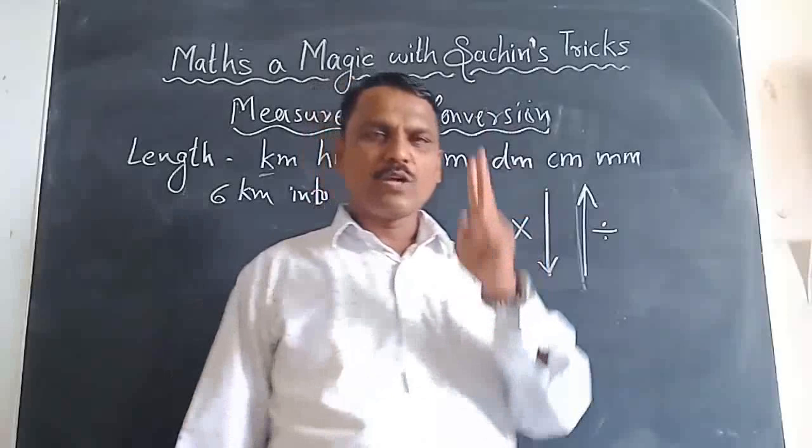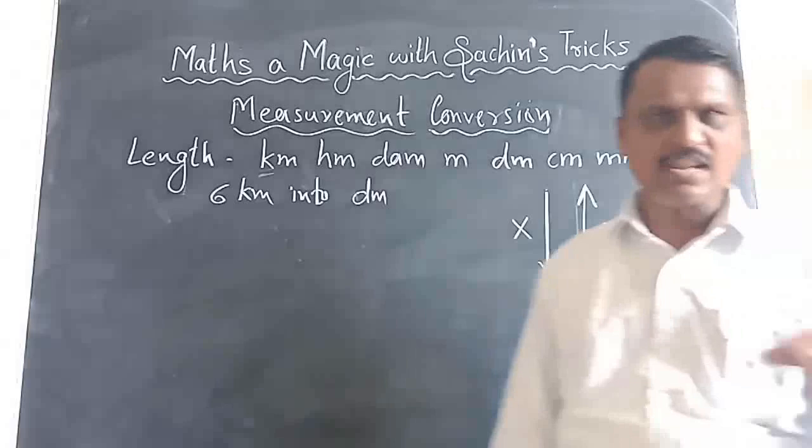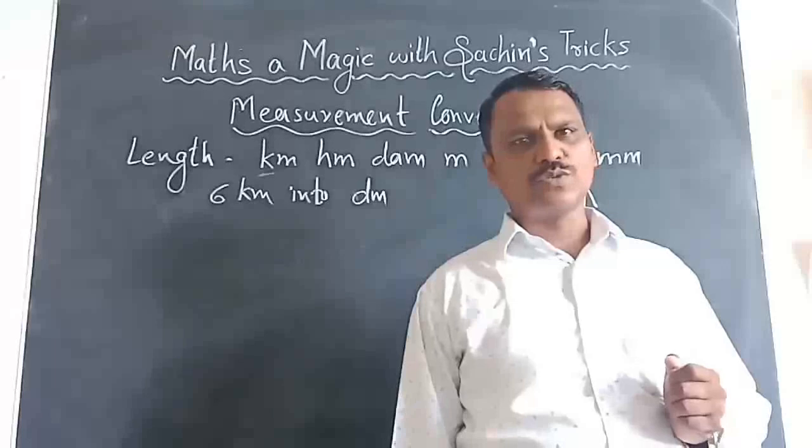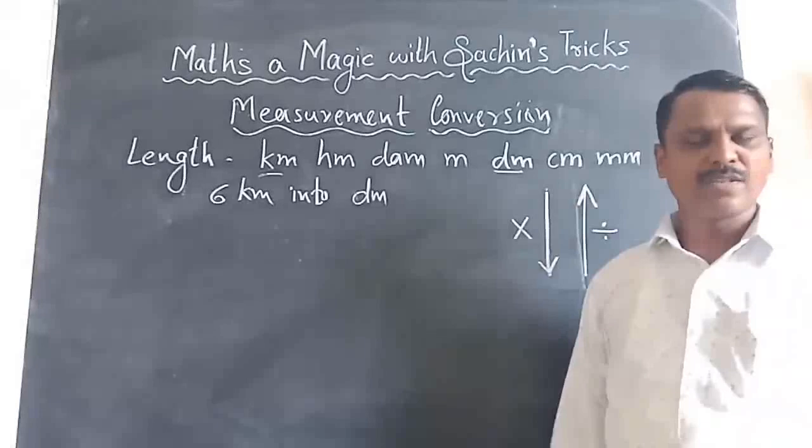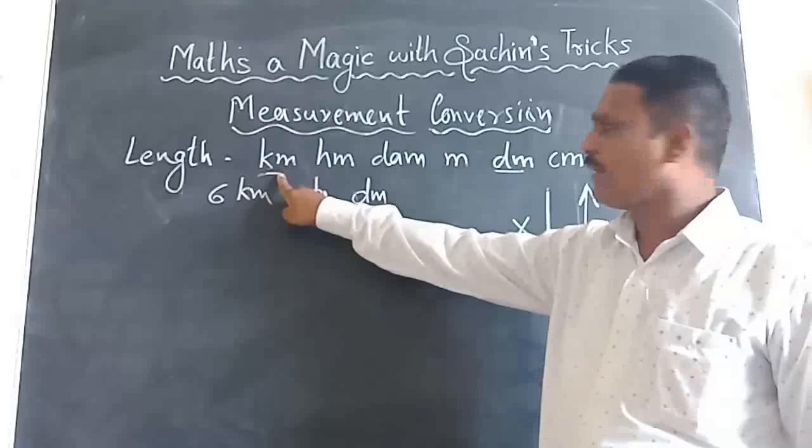Now the second question: by how much — by 10, 100, 1000, or 10,000 — do I have to multiply or divide? That confusion I will clear here. For the example of 6 km into decimeter, from kilometer I have to count the steps to reach decimeter. You count the steps — how many units are there in between?